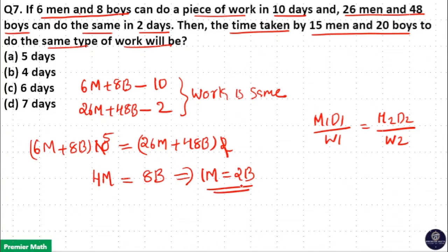So as per this 1 man equals 2 boys. Our question is asking to find time taken by 15 men and 20 boys to do the same job. Here 15 men and 20 boys means 15×2 + 20 which equals 50 boys.